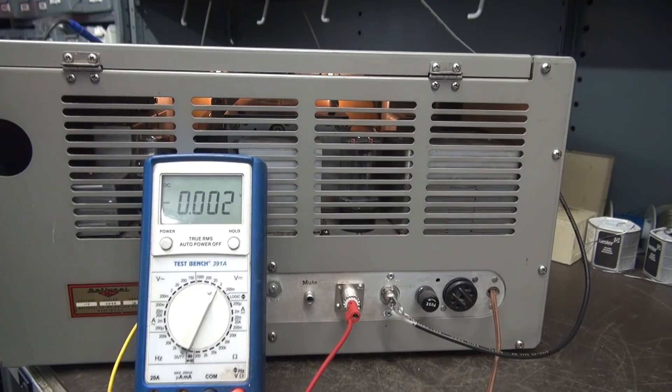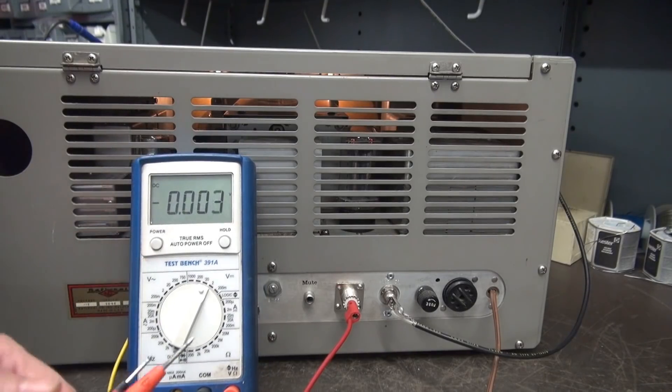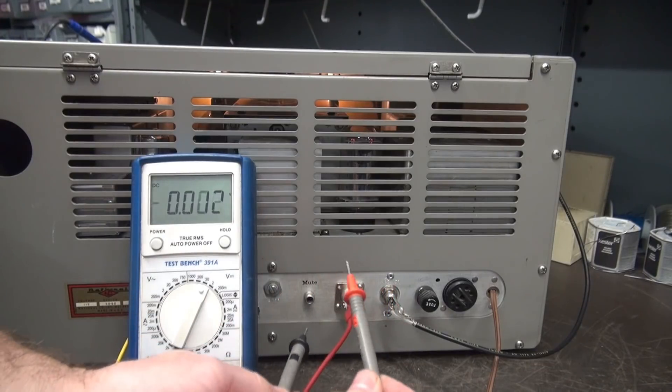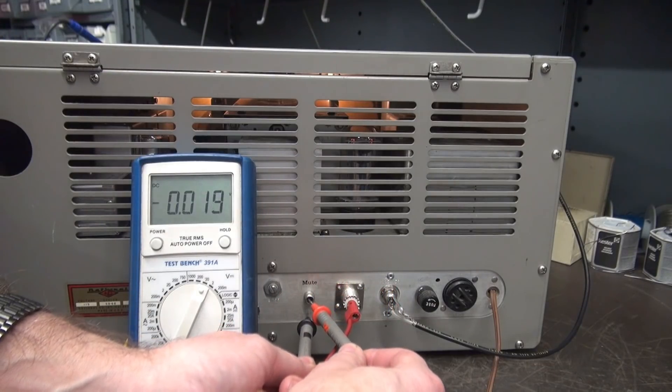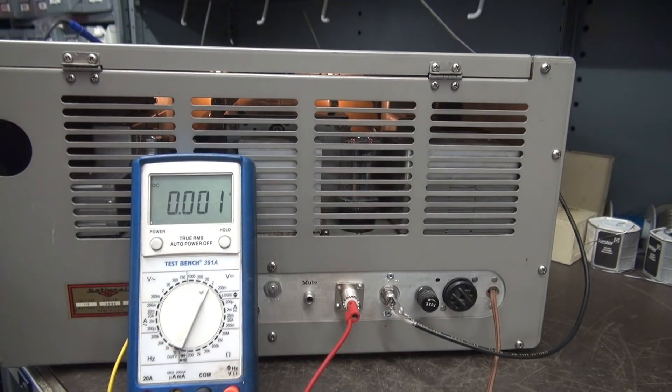So the new K1 standby system is installed in the 183. So let me show you what the voltage is now at the mute jack. A little over 16 volts. Much safer than 300.